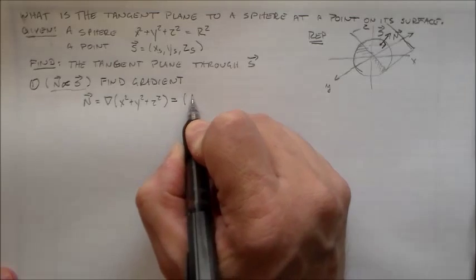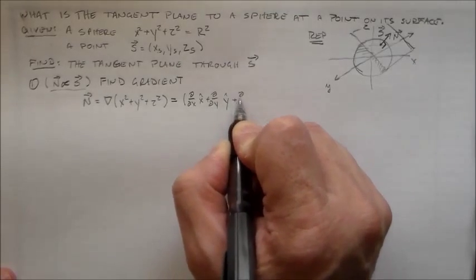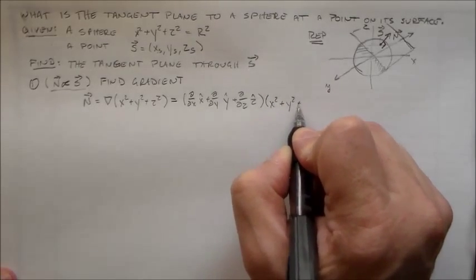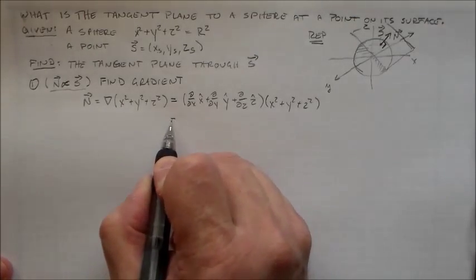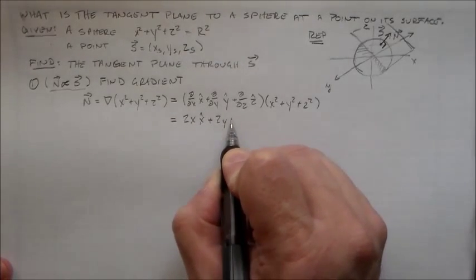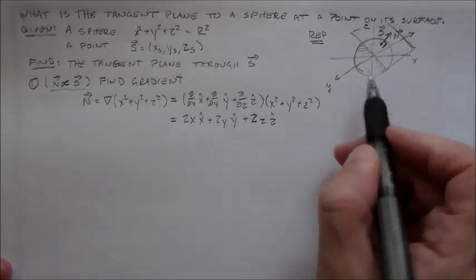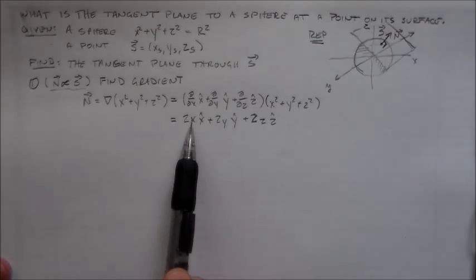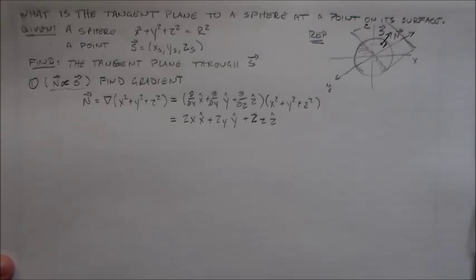So we go through and do this. We have d/dX in the X-hat direction plus d/dY in the Y-hat direction plus d/dZ in the Z-hat direction, and X squared plus Y squared plus Z squared feeds into that. When we do that, we end up with 2X in the X-hat direction plus 2Y in the Y-hat direction plus 2Z in the Z-hat direction. This is the gradient anywhere on the sphere. If I find the gradient at point S, it's going to be 2Xs, 2Ys, 2Zs — which is just twice S.